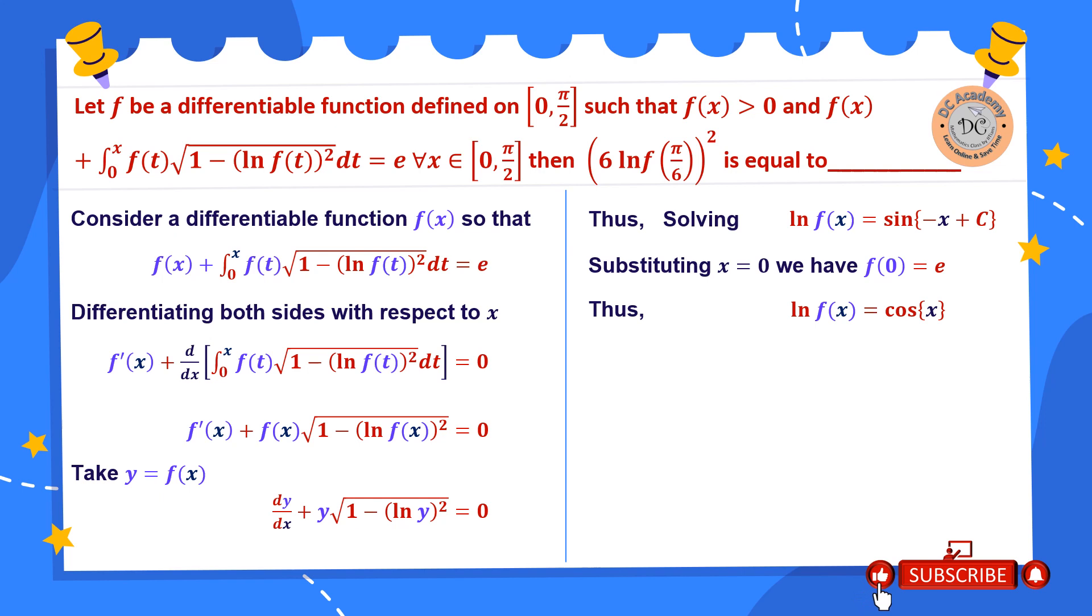So we have ln f(x) = cos x and therefore f(x) = e^(cos x). Now here as we need to find out ln(f(π/6)), we just substitute x = π/6. So therefore it will be cos(π/6), that is √3/2. So therefore 6 times ln(f(π/6)) is 6 × √3/2 which is 3√3. So therefore for this particular problem the correct answer will be 3√3, and that's it.